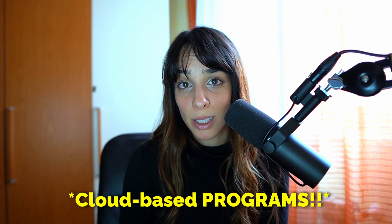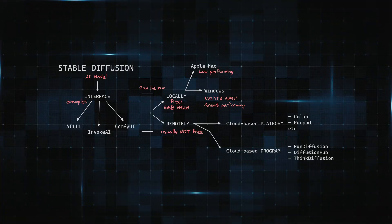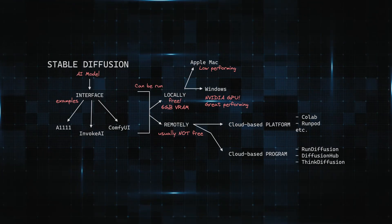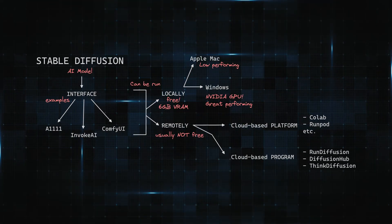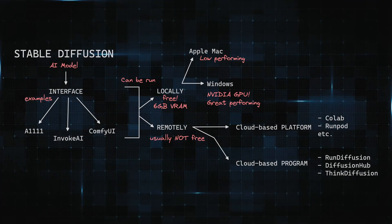If you don't like coding and don't want to deal with connection issues, you can go for cloud-based platforms instead. In this case you don't have to do anything with coding — you just need to sign up, log in, and press the run button for running Stable Diffusion. Different platforms available include Run Diffusion, Diffusion Hub, and Think Diffusion.